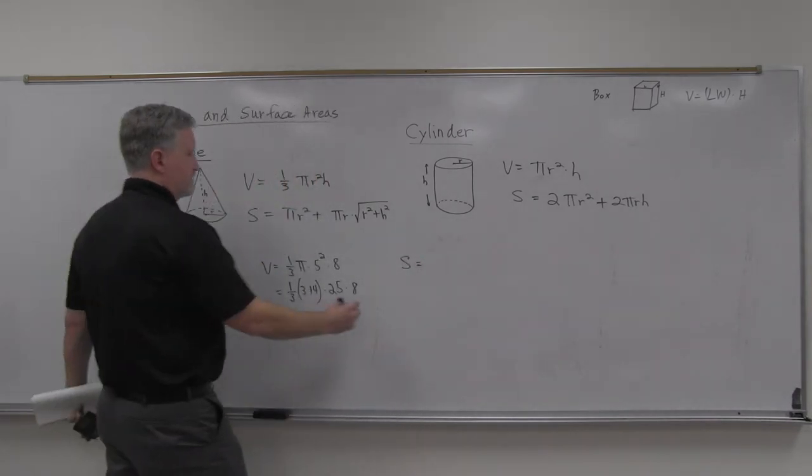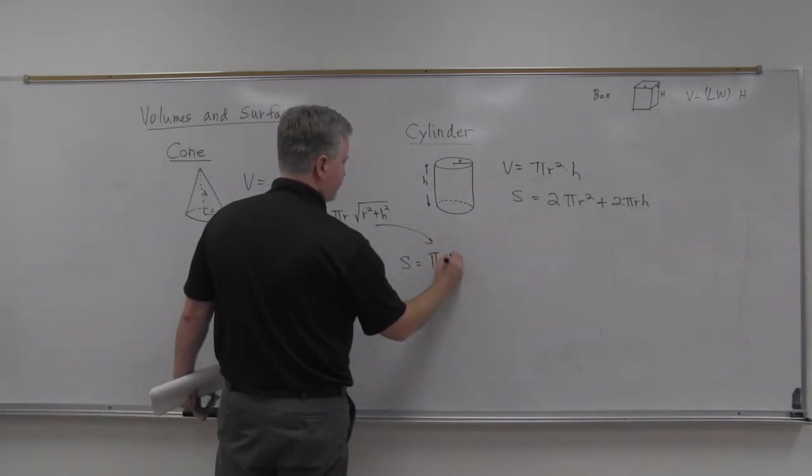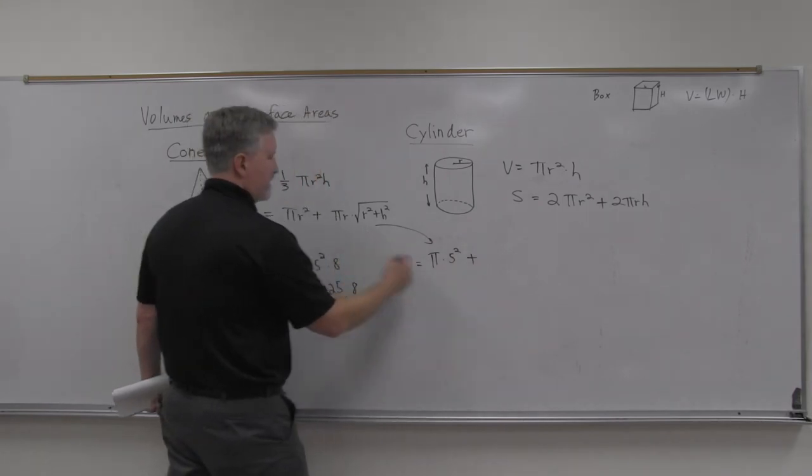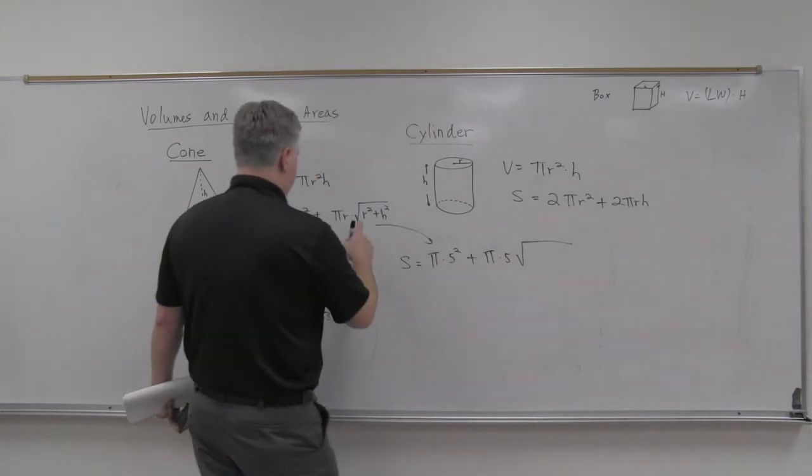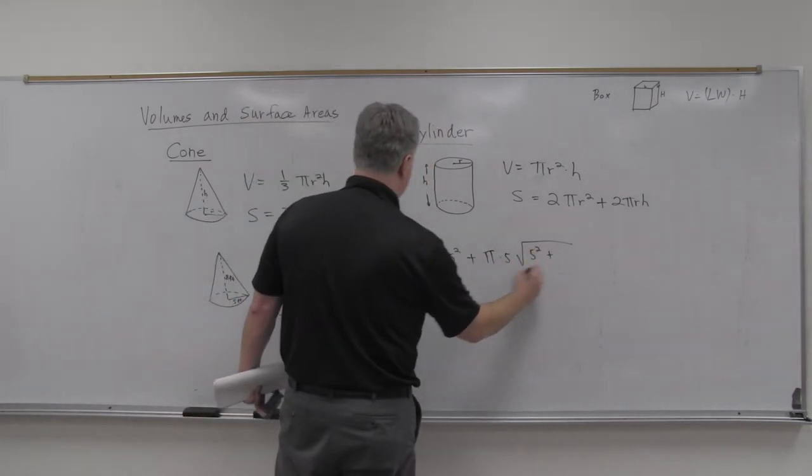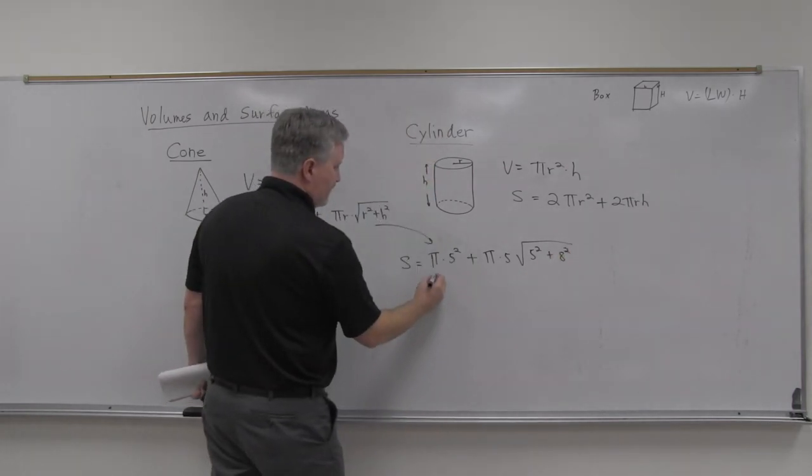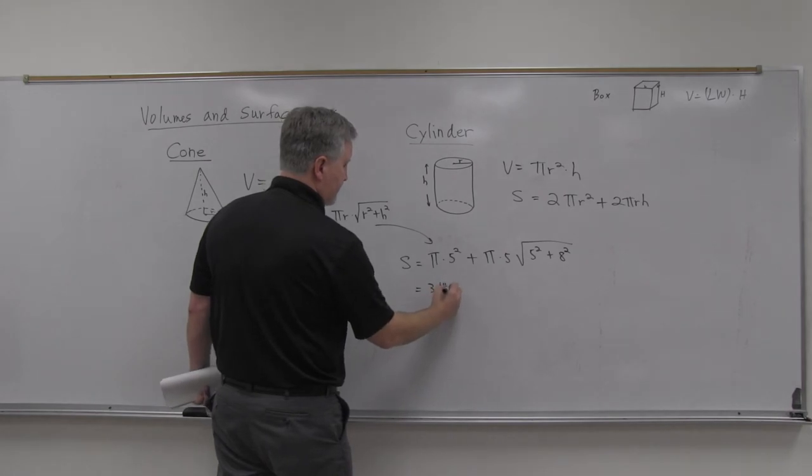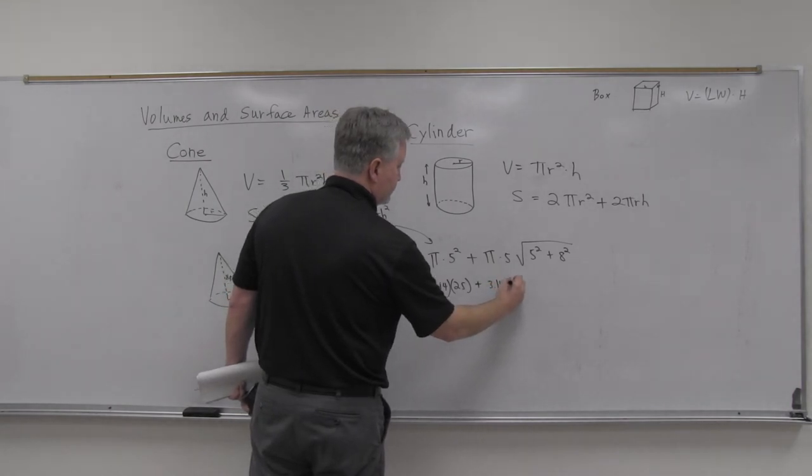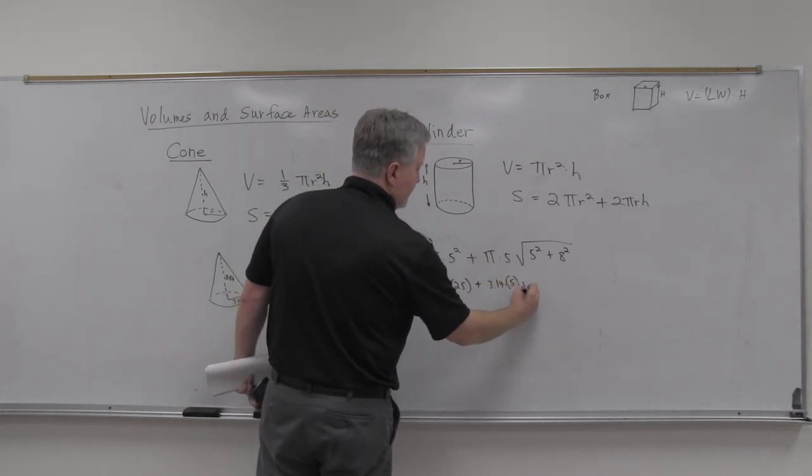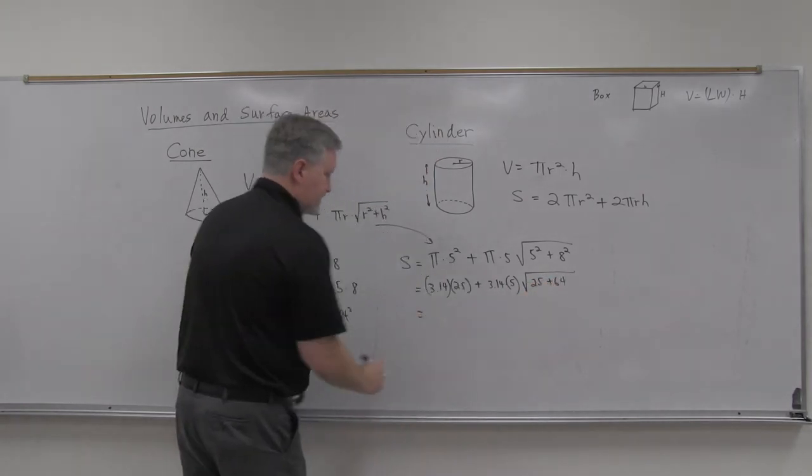Then the surface area is pi r squared, so that would be pi times five squared, plus pi times r, so that would be pi times five, times your square root of r squared, so that would be five squared again, plus h squared, like that. So we do the 3.14 times 25 right here, and then the 3.14 times five here. And then the square root, that would be 25 plus 64.